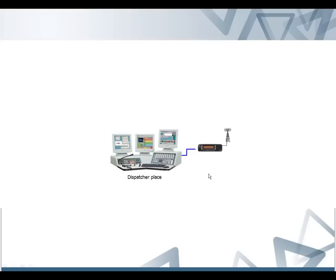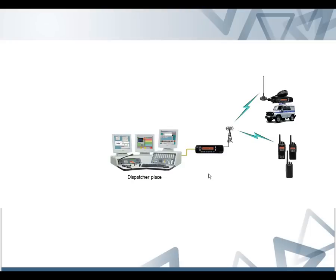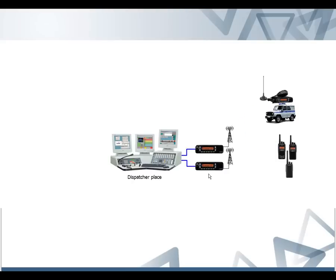Dispatching radio networks is carried out through fixed stations connected to the dispatcher working place directly. In this case, multiple radio stations can be connected to one dispatcher workplace. One of them, for example, is used for voice communication and the other is used as a backup or for data transmitting or receiving.